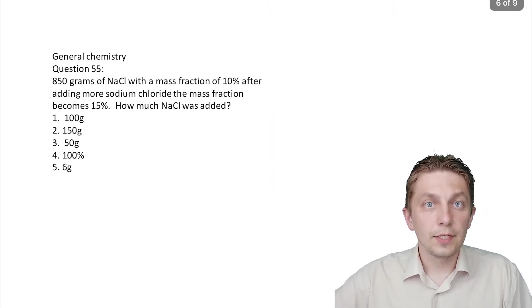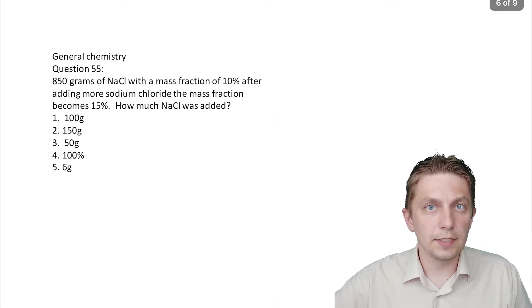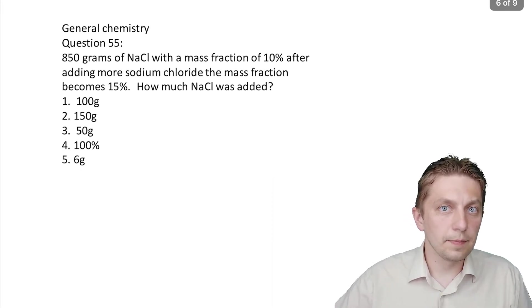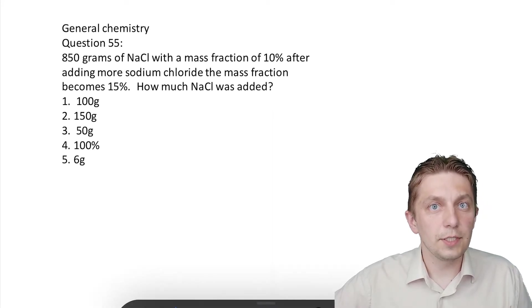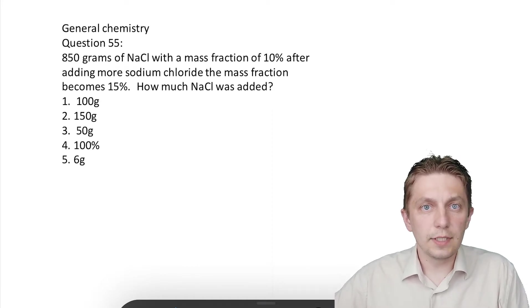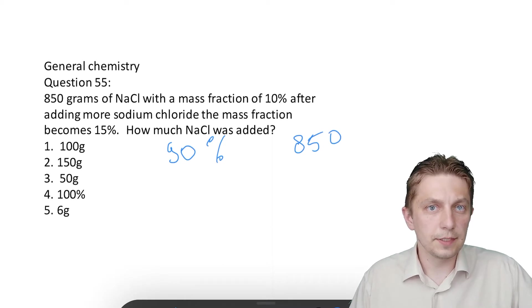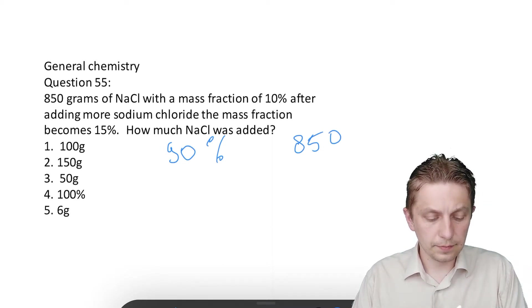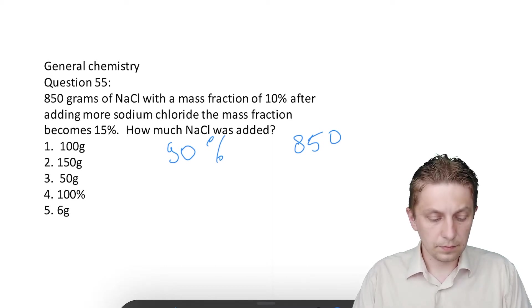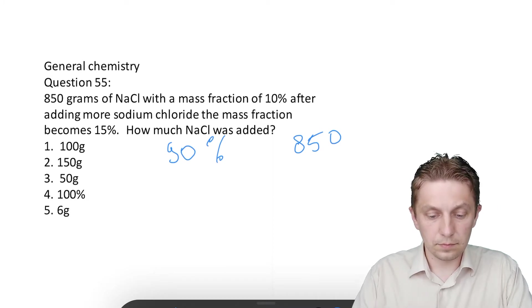Next, general chemistry. 850 grams of NaCl with mass fraction 10% - after adding more solid sodium chloride mass fraction becomes 15%. How much NaCl was added? At first let's find mass of water. Water fraction it's 90 percent, so 90 percent from 850 gram, let's count.